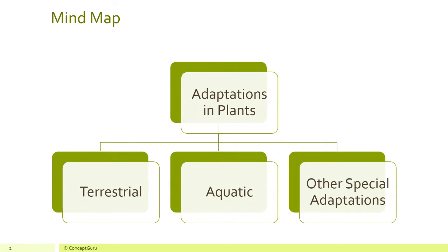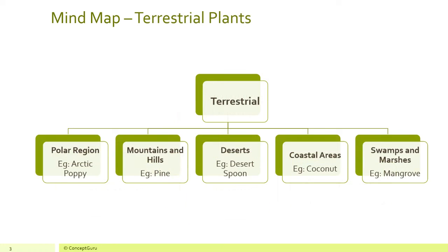The adaptations in plants are of three broad categories: adaptations in terrestrial plants, adaptations in aquatic plants, and some other special adaptations. Adaptations in terrestrial plants can be categorized into five parts: adaptations of plants in the polar region (example: arctic poppy), adaptations in the mountains and hills (like pine), adaptations in deserts (like desert spoon), adaptations in coastal areas (like coconut), and adaptations in swamps and marshes (like mangrove).